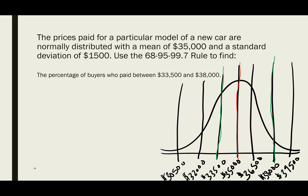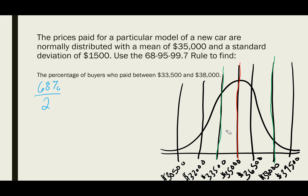Let's work with the left-hand side first. We know that plus or minus one standard deviation covers 68% of the data. But we don't want plus or minus — we only want from the mean to the green line at $33,500. Since the normal distribution is symmetric, we divide by two. So that left-hand portion — the light blue section — is 34%.